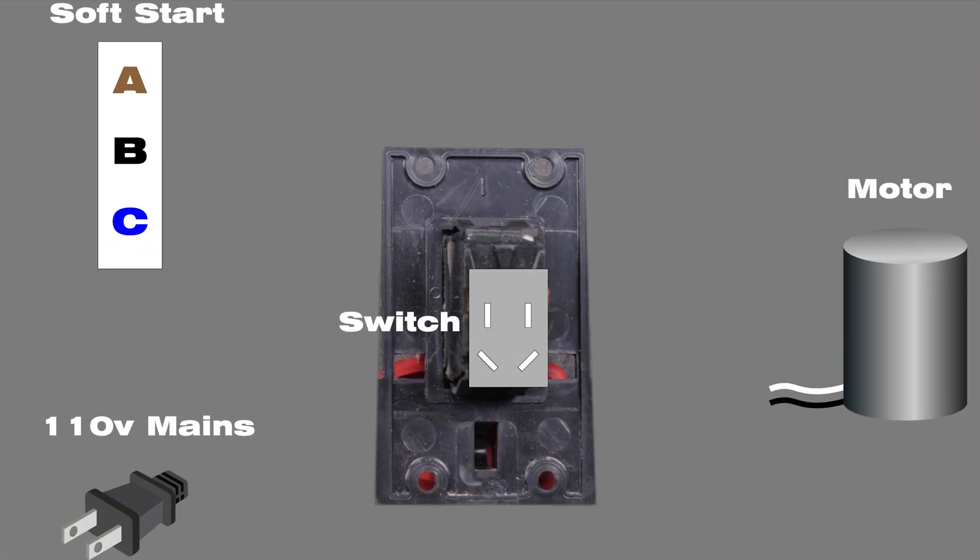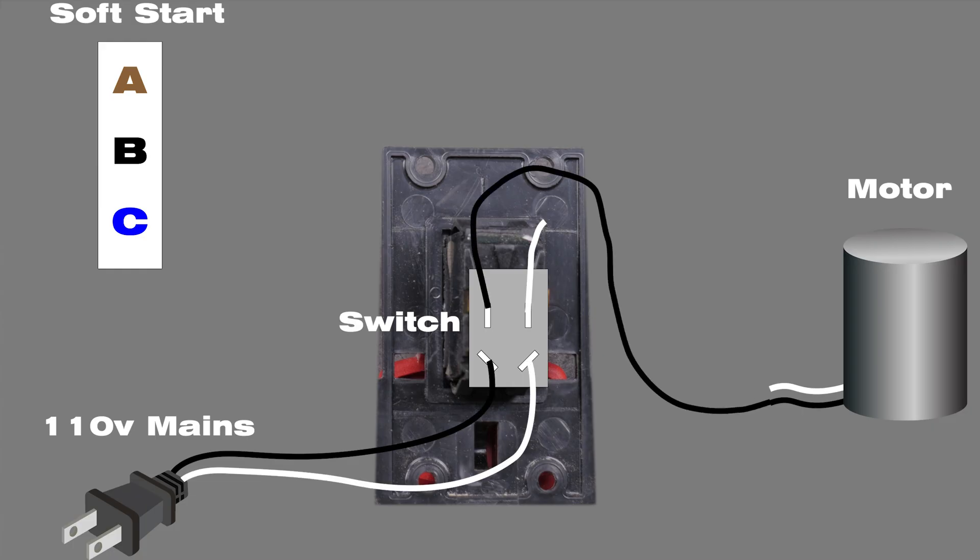The original switch wiring is very straightforward. Mains hot is switched to the motor hot lead and the mains neutral is switched through to the neutral on the motor. The Hitachi soft start module has three leads: brown, black, and blue, and is inserted on the motor side of the switch.